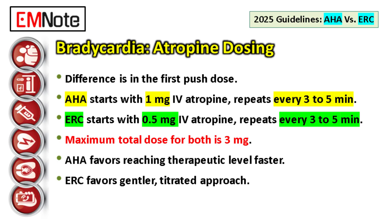The AHA seems to favor getting to a possibly therapeutic level faster. You need to recognize: 1 milligram start is the U.S. standard, but 0.5 milligrams is the accepted norm in Europe for the first try.